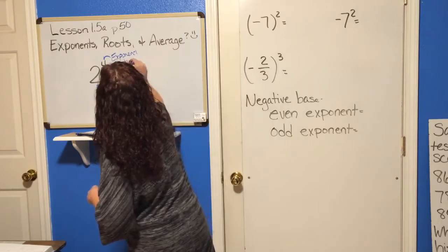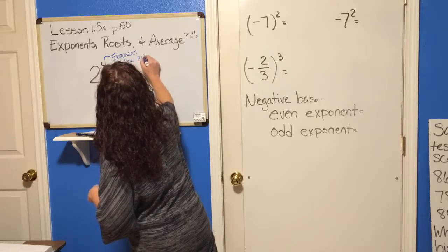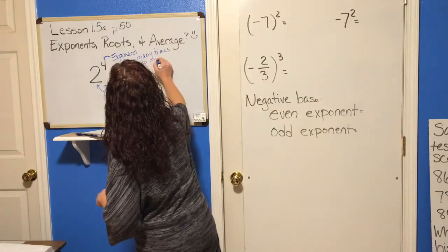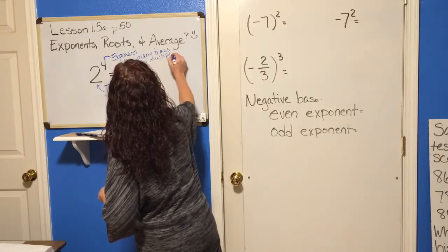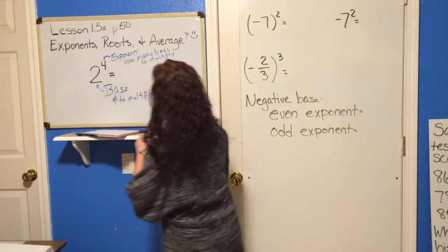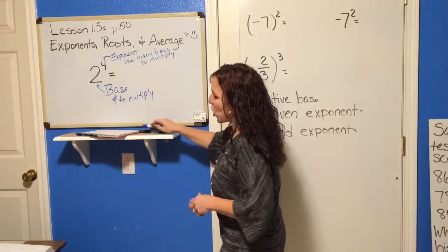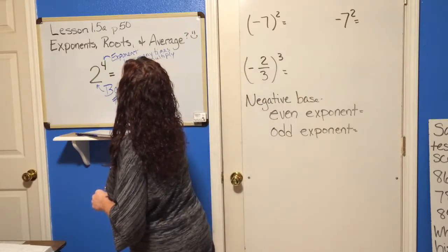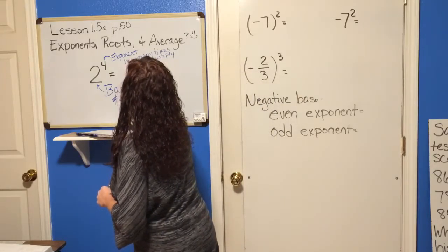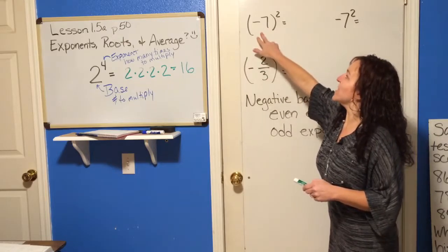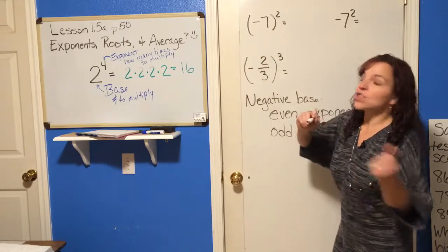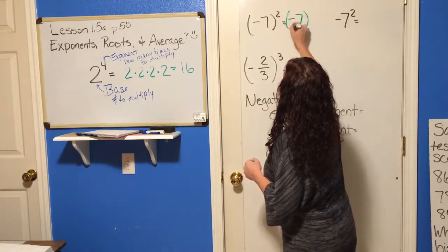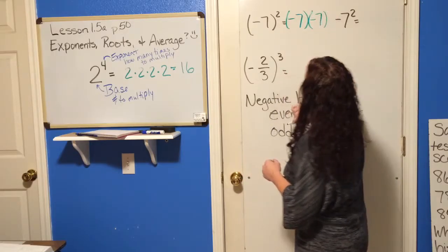The first thing is exponents. You see here that we have 2 to the 4th power, and you should already know that the 2 is called the base and the 4 is the exponent. The base is telling you what number you are going to multiply, and the 4 tells you how many times to multiply that number.